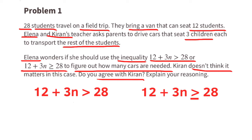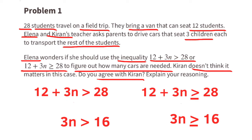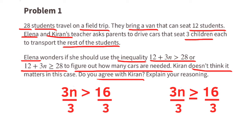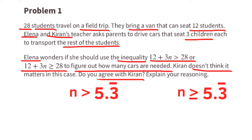Let's find out. We can solve for n for both of these equations. Subtract 12 from both sides of the inequality for both equations. Then divide both sides by 3. 3n divided by 3 is n, and 16 divided by 3 is 5.3 repeating, which means it's more than 5 cars. Since they'd need more than 5 cars, that means they'd need to take 6 cars. I agree with Corinne — you can use either of these inequalities to figure this out.